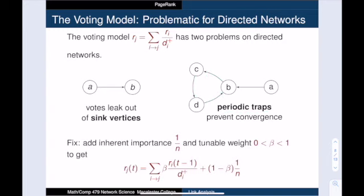We can fix both these problems at once by changing our update rule. We assume that every vertex has an inherent importance. This is equal to 1 over n, where n is the size of the network. The new importance score of a vertex is a weighted sum of the importance of its neighbors and its inherent importance.